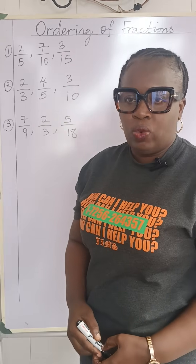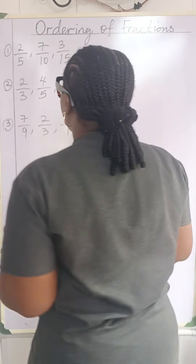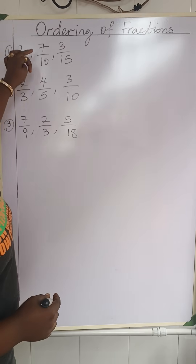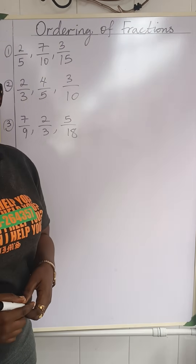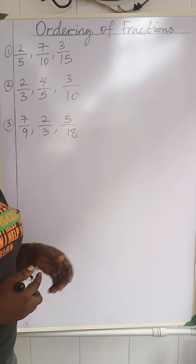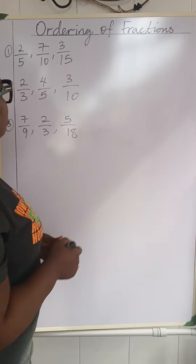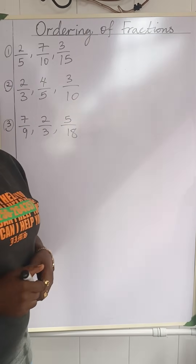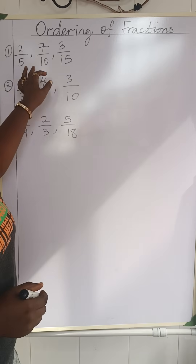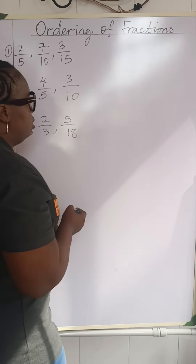Now let's use the easiest method to get this done. Look at number one: it is 2 over 5, 7 over 10, and 3 over 15. How are we going to know the smallest fraction? We are going to use the LCM method to get a common denominator, because they have different denominators — we have 5, 10, and 15.